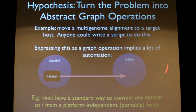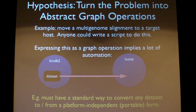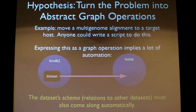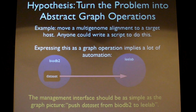If you force yourself to think in this pure abstraction model, it implies many things that must be automated. You need a completely standardized way to convert any dataset to or from a platform-independent portable form. The actual code for the dataset's standard interface must also come along automatically with the data. The schema must come along automatically. The relations to other datasets must work regardless of where those datasets are stored. And the management interface should be as simple as drawing that picture — you draw it, it's executed, that's it.